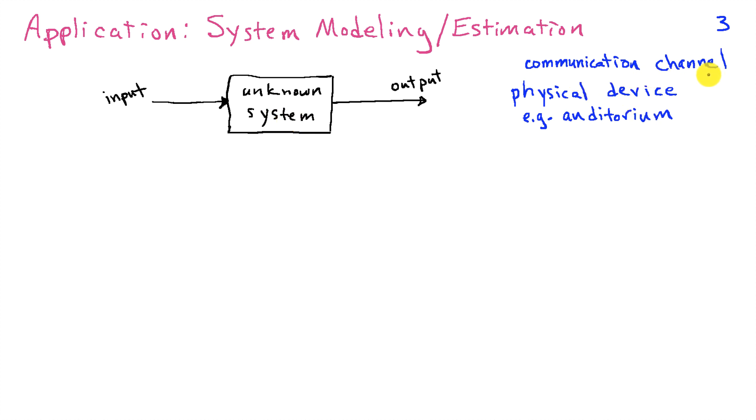The system could be a communication channel, say the DSL modem channel from your provider to your house, or it could be a physical space or a physical device. For example, it could represent the effect of speaking into a microphone and then being transmitted through speakers to a particular seat or location in an auditorium.